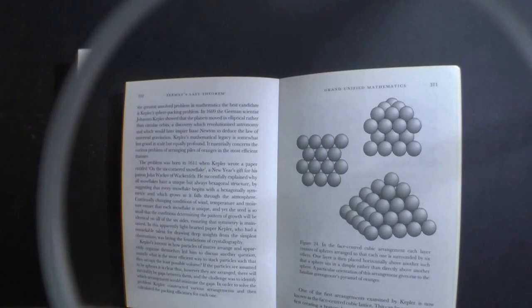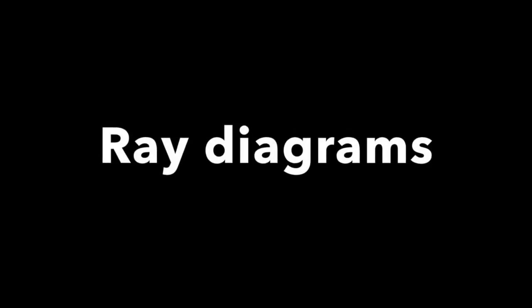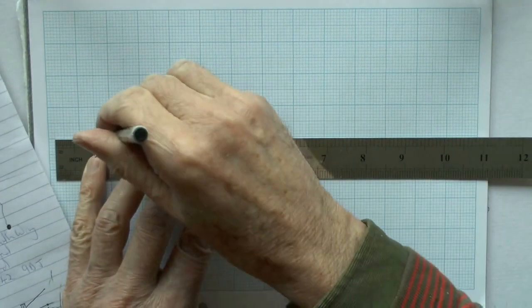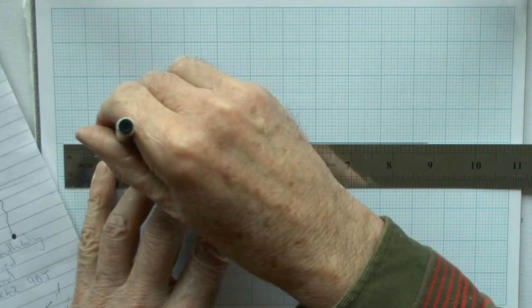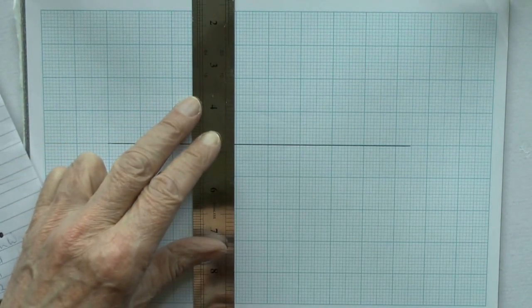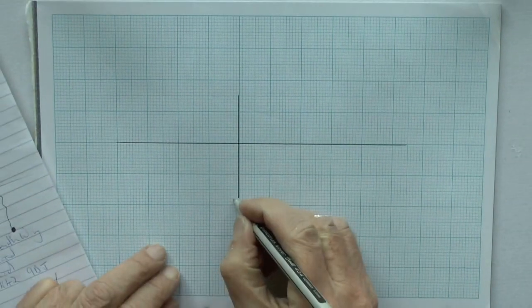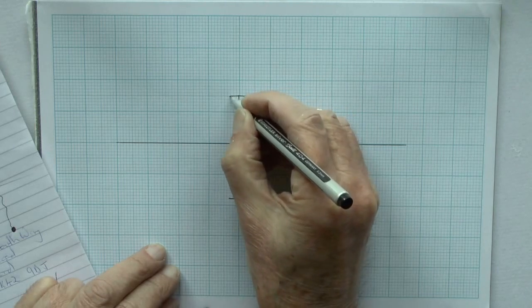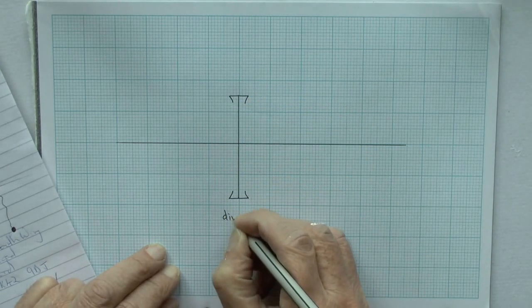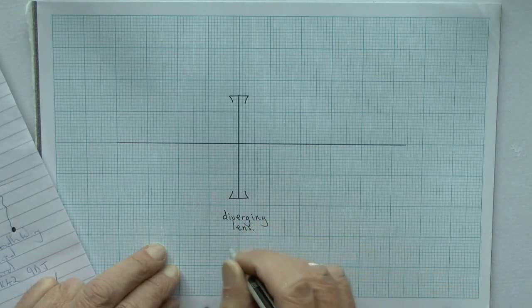I'll try and show you this using a ray diagram and at the same time, I'll try and show you how ray diagrams are drawn. If we start with the principal axis, that's the line that goes right through the center of the lens, perpendicular to the lens. I'm drawing the lens simply as a straight line, but indicating that it's a diverging lens by putting little markers on the edge, showing that it's thick at the edge and thinner as you go towards the center.